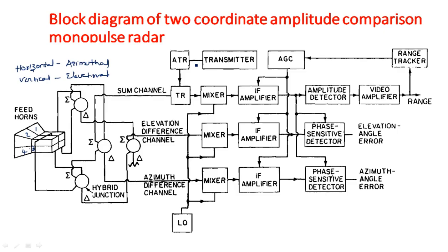In tracking radar systems, we focus on improving the receiver, not the transmitting section. The transmitter can send a pulse waveform, a continuous waveform, or any modulated signal. Since this is monopulse, we use a pulse transmitter. A duplexer is used — specifically an ATR (anti-transmit-receive) and TR (transmit-receive) — and the output is fed into four different hybrid junctions.